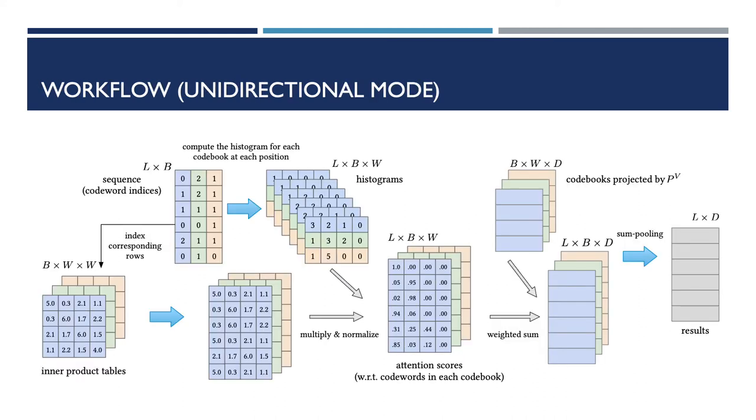Now, we present the complete workflow of our proposed linear self-attention method in unidirectional attention mode. As we can see, for our input sequence, we have to compute the histogram for each code book at each position. Now, we also have an inner product table between all the code words. And we can use the inner product table together with the computed histogram to compute the attention score. The attention score is then used to compute the weighted average of the input sequences. We then perform some pooling over all of the different code books to get the final result.